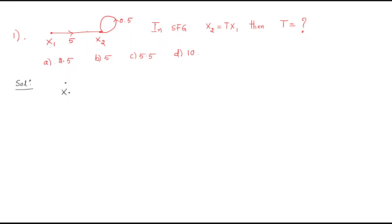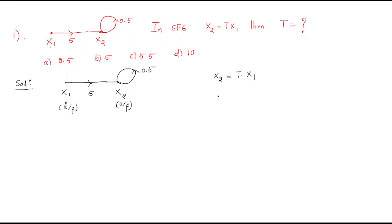Before solving the problem, it is better to redraw the signal flow graph. Here x1 has only incoming branches, so it is the input node. There is a gain of 5 between x1 and x2. x2 has only outgoing branches, so it is the output node, and it has a self-loop with gain 0.5. We need to find x2/x1, which is the transfer function t.